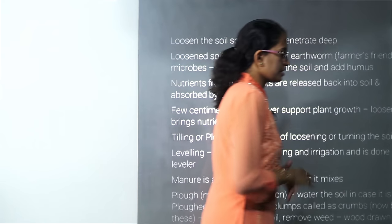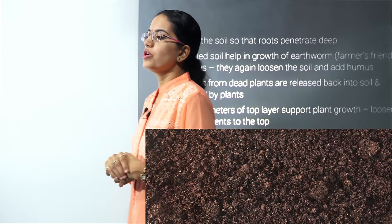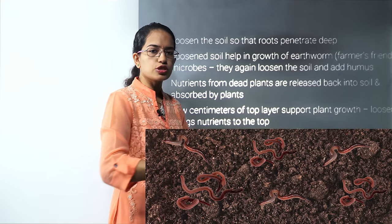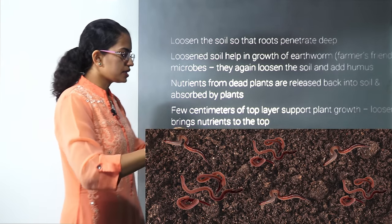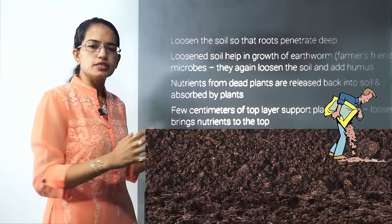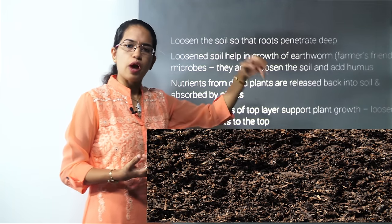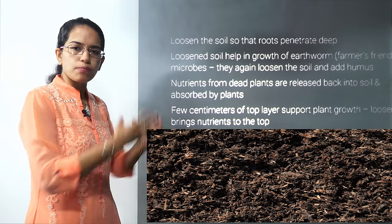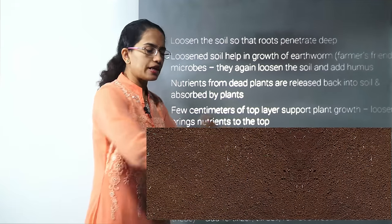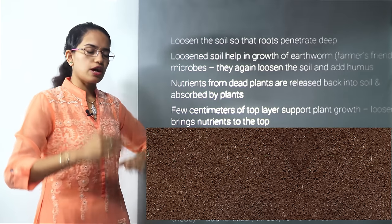When preparing the soil, earthworms are the farmer's friend — they loosen out the soil, making aeration easier. From this loosened soil, adding manure, fertilizers, or humus becomes much easier. Nutrients from dead decomposed plants and animals go into the soil and are absorbed by plants. After digging, the soil has upheavals that need to be leveled off.